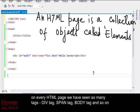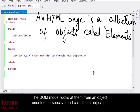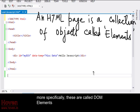On every HTML page we have seen so many tags, div tag, span tag, body tag and so on. The DOM model looks at them from an object oriented perspective and calls them objects. More specifically, these are called DOM elements.